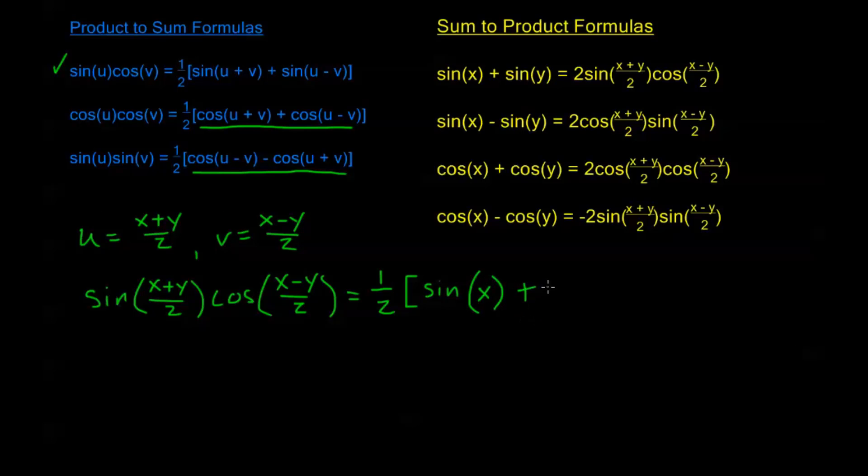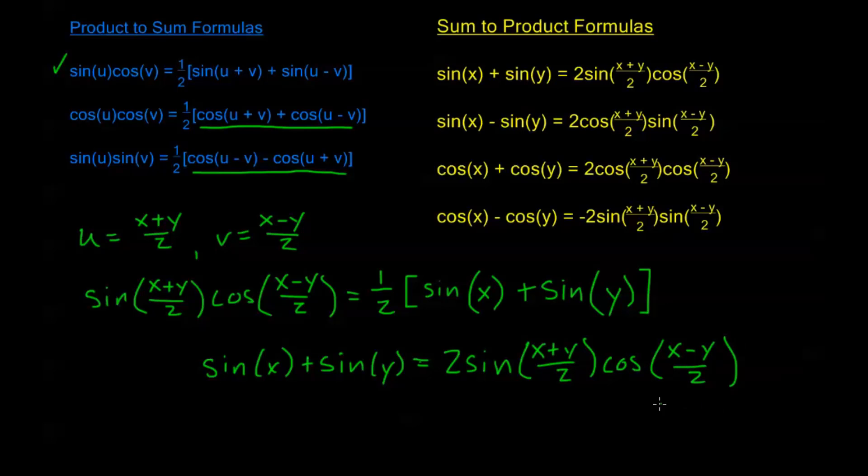Now I have plus sine of u minus v. So if I take u and subtract v, I'm going to have x over 2 minus x over 2, so they go away. And then I have y over 2 minus a negative y over 2. So that gives me 2y over 2, or simply y. And look at here, multiplying both sides by 2 gives me sine of x plus sine of y is equal to 2 sine of x plus y over 2 cosine of x minus y over 2. And that's it.